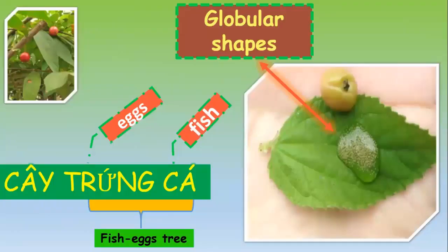Now, look at this — why is it named trưng kè? Local people gave that name by using their imagination. They named it trưng kè, meaning fish eggs, based on the globular shape inside it, as we can see.